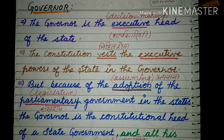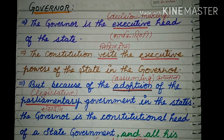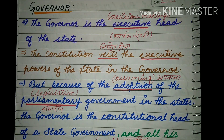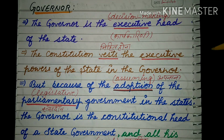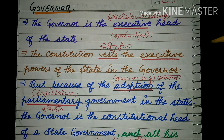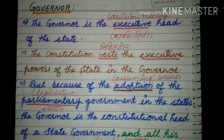The Governor is the executive head of the state. Executive means decision making — कार्यकारिणी. The Governor होता है executing head अपने state का, अपने राज्य का सबसे बड़ा कार्यकारिणी — राज्यपाल होता है. The Constitution vests the executive power of the state in the Governor. जो कार्यकारी शक्तियां होती हैं state की, वो Governor के अंदर ही निहित होती हैं.